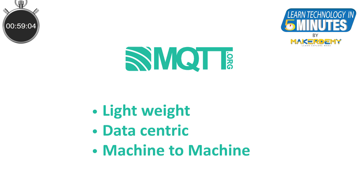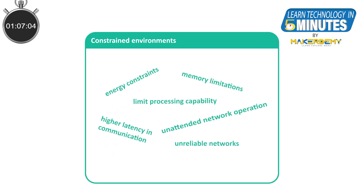MQTT, on the other hand, is a machine-to-machine, data-centric, lightweight protocol designed to operate in resource-constrained environments. A lot of IoT projects require devices to operate under a variety of resource constraints like limited processing capability, unattended network operation, highly unreliable networks, energy constraints, and so on.